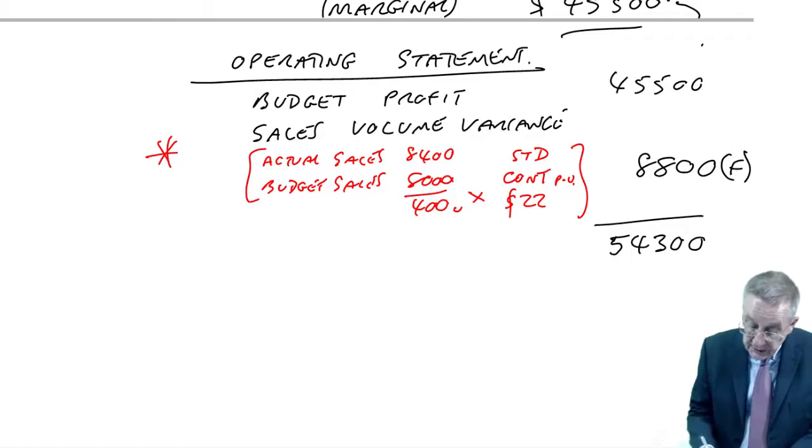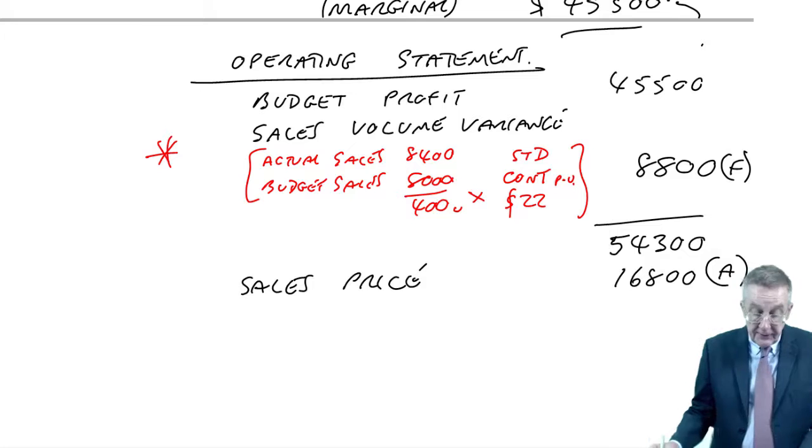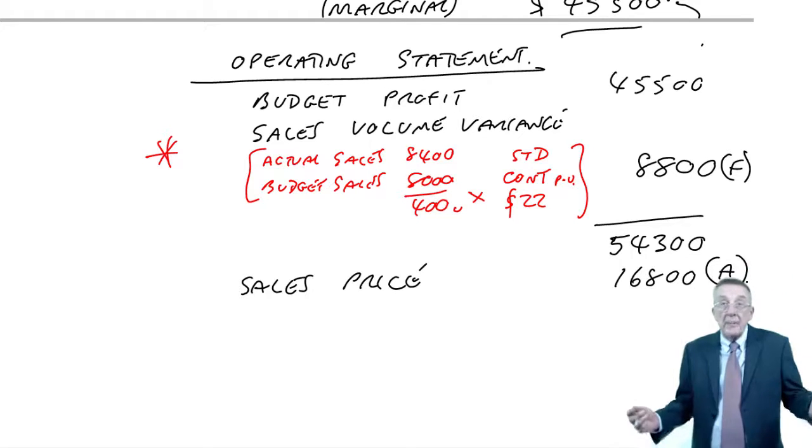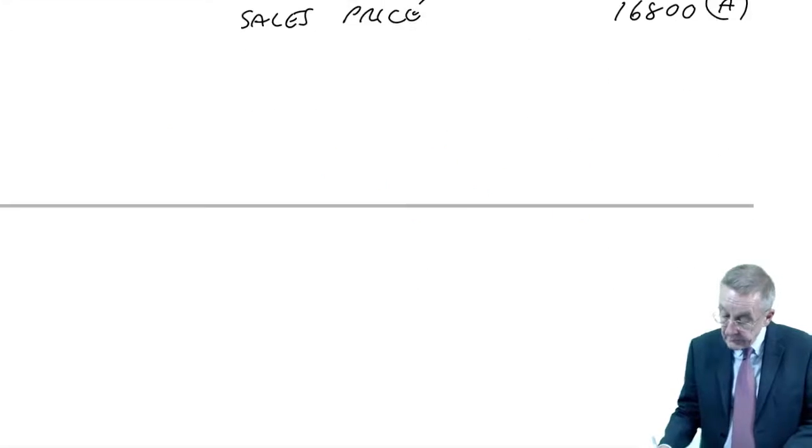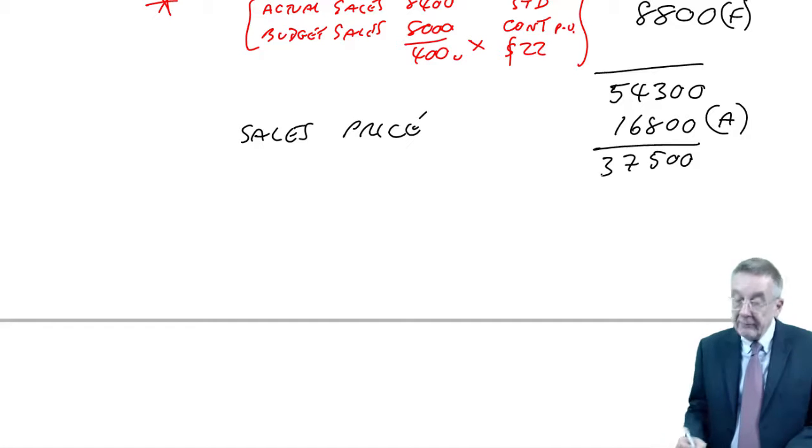What else? We had the sales price variance. Well, same as before. I'm not going to go back through the workings. It was 16,800 adverse. Dropped the price, obviously less profit. Doesn't matter whether marginal or absorption. So that brings us down to 37,500.